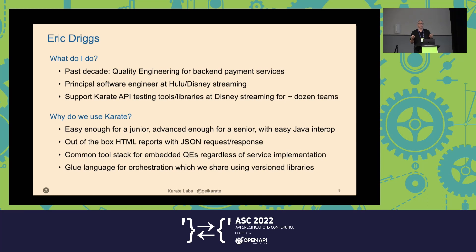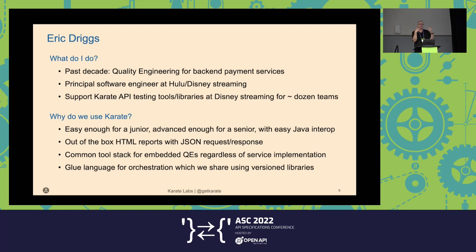Now we have dozens and dozens of services and we actually use common libraries. When I want to do something like create a Roku user on a specific bundle with specific components, it's really easy to use that. As one service updates, we use a common library that's semantically versioned. Teams are able to maintain their code and we're able to reuse and add orchestration flows that use dozens of services interacting with each other.